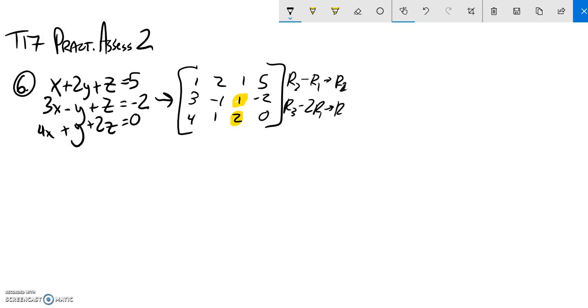I'm going to put this into row 2 and this one into row 3. So row 2 minus row 1. First row is unaffected. 3 minus 1 is 2. Negative 1 minus 2, that should be negative 3. 1 minus 1 is 0. Negative 2 minus 5 is negative 7. That feels good.